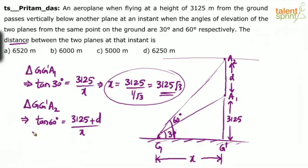What is tan 60 by the way? Root 3. So we can say root 3 equals 3125 plus D by X, which is 3125 root 3. Simplify this. What will be the value of D? 3125 root 3 times root 3 equals 3125 times 3. How much is 3125 times 3? 9375. 9375 minus 3125, that comes out to be 6250. Option D, that's your answer.